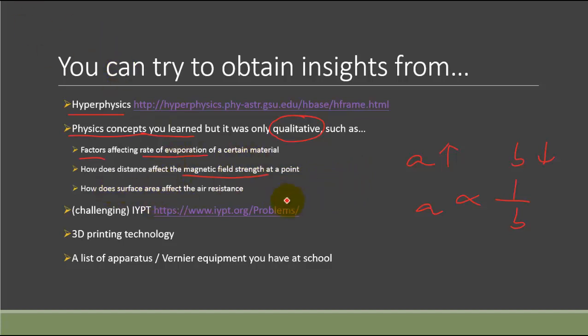Another example could be like, we all know air resistance, even in IB as well, it will increase with the greater surface area. So how does it actually increase? Does it again increase linearly or does it increase in what kind of ratio?